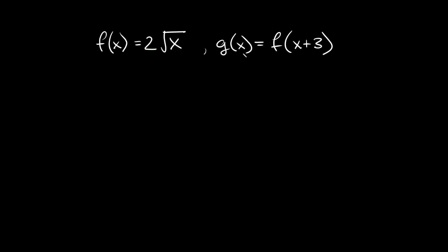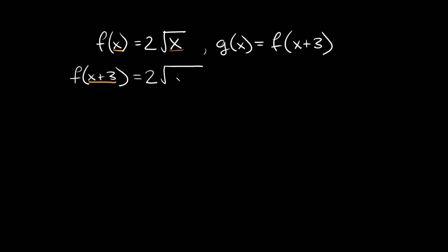Over here we're given that g of x is equal to f of x plus three. So basically all we're doing here is replacing f of x with whatever we're given for g of x, which is f of x plus three. So instead of f of x we're going to have f of x plus three — wherever we have an x we're going to replace it with x plus three. So this is going to be equal to two times the square root of x plus three.